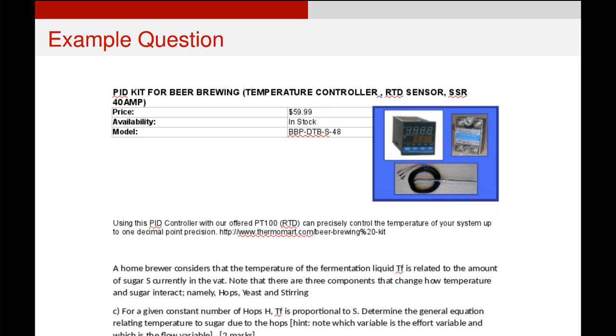So here's what an example question might look like in a test based on this. This one says a home brewer has a temperature of fermentation liquid, he figures out his relationship to the current amount of sugar in the vat. And there's a few other things that are important: whether it's stirred, whether there's hops, and whether there's yeast. So the question is, for a given constant number of hops, he has observed, or she has observed, that the fermentation liquid temperature is proportional to s. Determine the general equation and then the specific equation relating temperature to sugar.